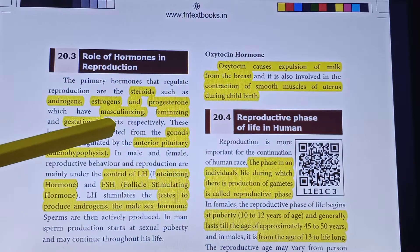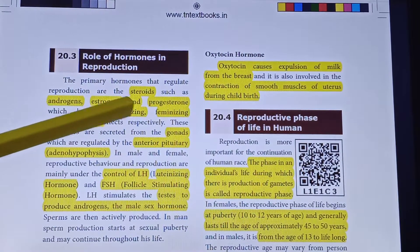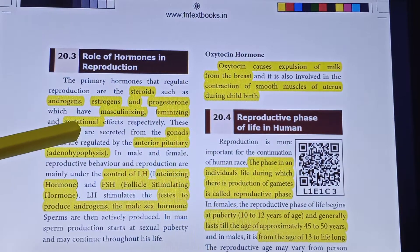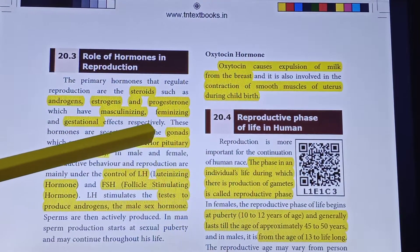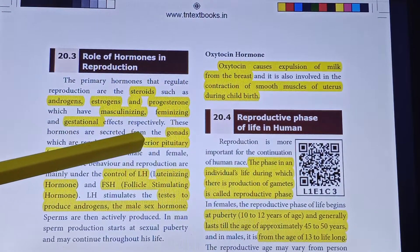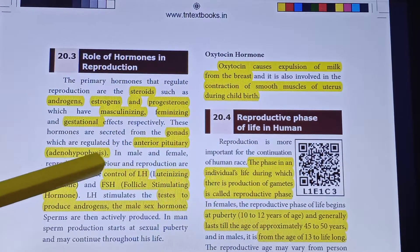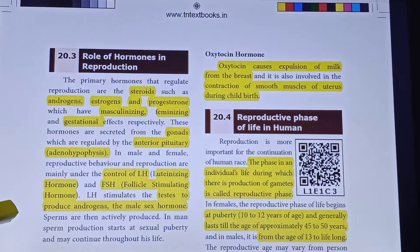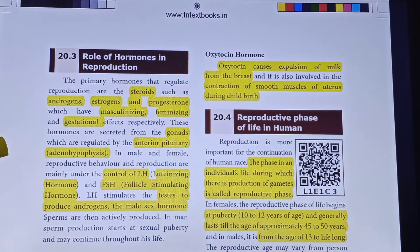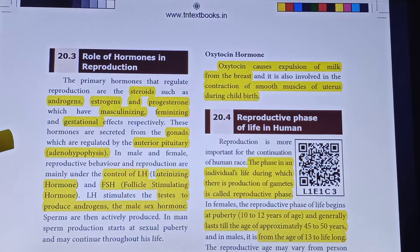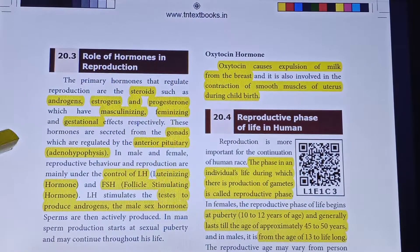So, androgens are responsible for masculinizing, estrogen for feminizing, and progesterone for gestational effect. These hormones are secreted from the gonads — that is, the reproductive organs — which are regulated by hormones. The gonads are regulated by the brain, specifically the pituitary gland, which has an anterior lobe and a posterior lobe.